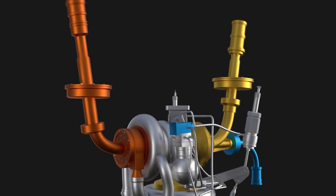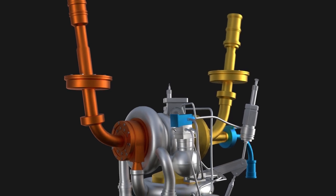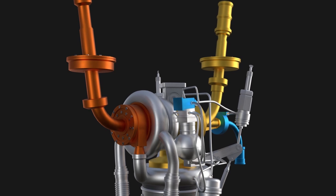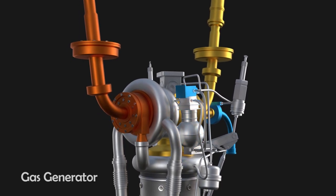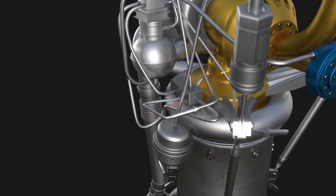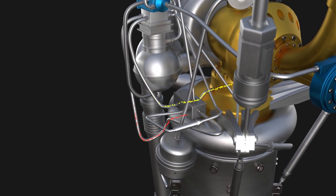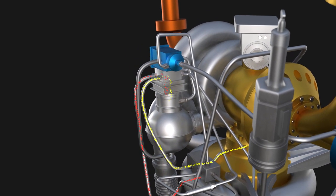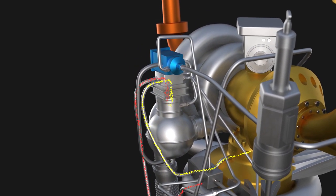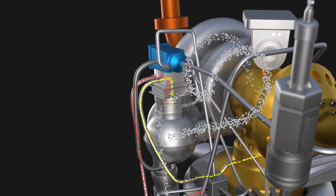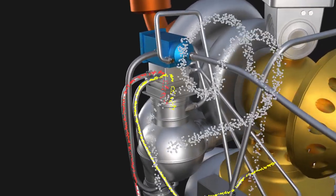This engine runs on a gas generator cycle, and it is called so because a gas generator, which is this, is used to run the turbine and pumps. Some fuel and oxidizer are bypassed from the high-pressure manifolds through the lines to the gas generator. These propellants mix in the gas generator. They ignite and create high-pressure exhaust gas, which is then transferred to the turbine.